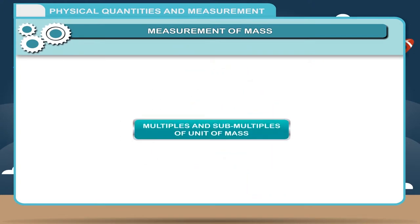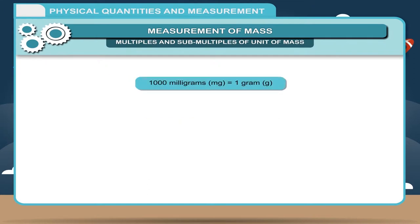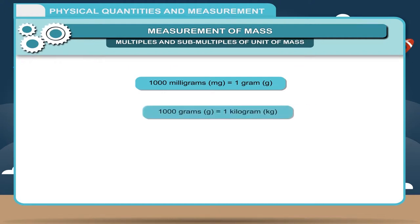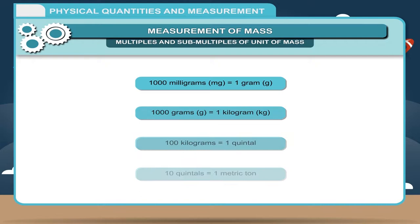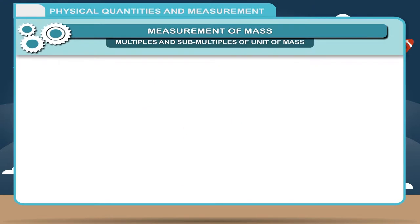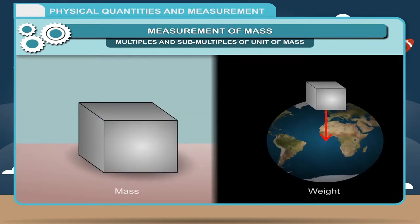Multiples and sub-multiples of unit of mass: 1000 mg = 1 gram (g); 1000 grams = 1 kilogram (kg); 100 kg = 1 quintal; 10 quintals = 1 metric tonne. Note: We must not confuse mass and weight as the same physical quantities. Mass is the amount of matter contained in a body, while weight is the force with which the earth attracts a body towards its centre.